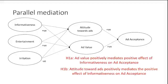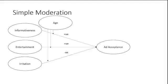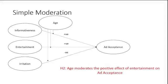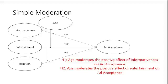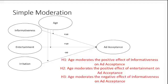In the same manner, you can write the hypothesis for entertainment and irritation. When there is a moderation, we have IVs on one side, a DV on the right-hand side, and the moderator in the middle. The arrows are connected with the paths, not with the variables, clearly indicating that the moderator has an effect on the relationship. For example: age moderates the positive effect of entertainment on ad acceptance, and age moderates the positive effect of informativeness on ad acceptance.